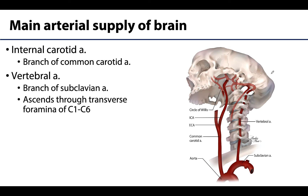There are two pairs of arteries that supply blood to the brain. These will be the internal carotid artery, which you can see here, and the vertebral arteries, which you can see here.